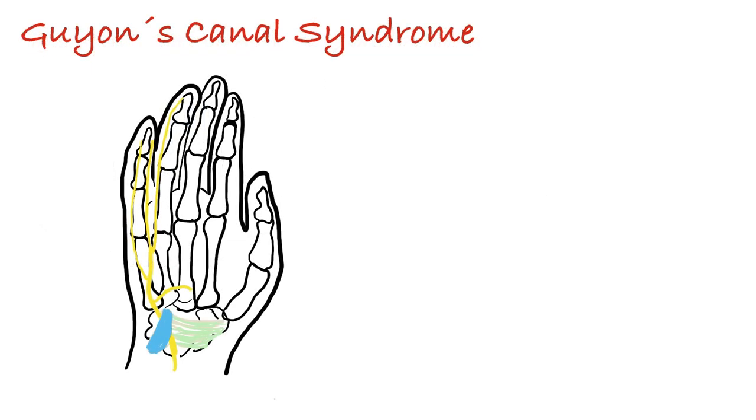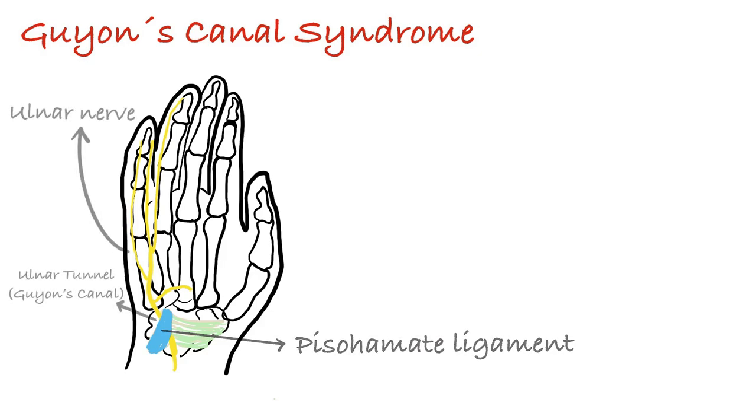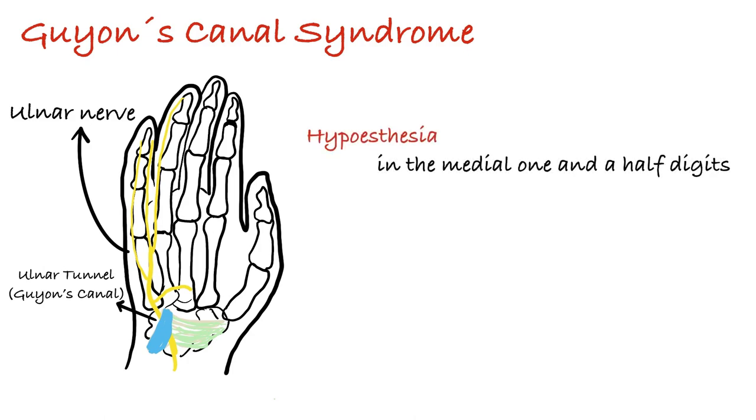Guyon's canal syndrome. Between the pisiform and the hook of hamate, there is pisohamate ligament. The area between this ligament and bones is called as Guyon's canal, and the ulnar nerve passes through it, which I mentioned before. Compression in Guyon's canal as a result of this narrowing may affect the ulnar nerve. It may result in hypoesthesia in the medial one and a half digits and weakness of the intrinsic muscles in the hand. So there will be hardness while performing fine movements of the hand, such as pinching, gripping.